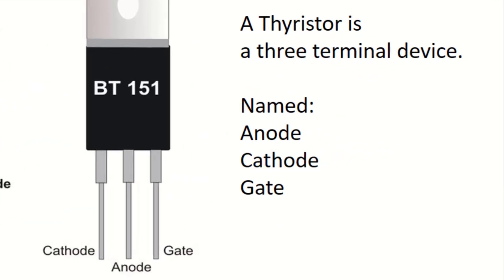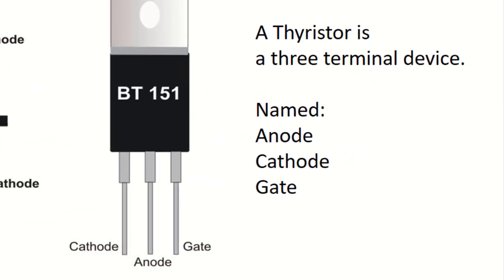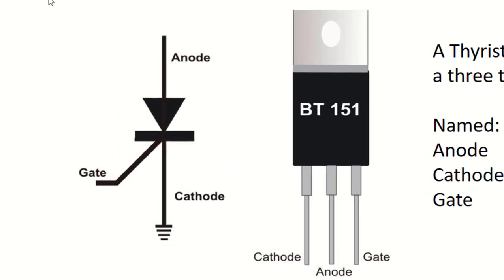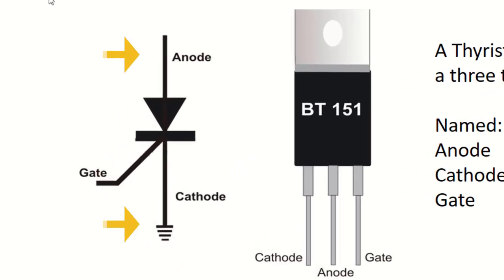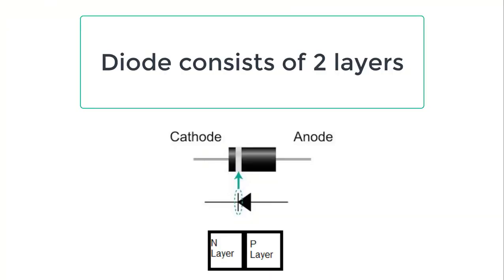A thyristor is a three terminal device. Those terminals are anode, cathode, and gate. Anode and cathode terminals represent the switching terminals, while the gate represents the control element that switches on the thyristor.